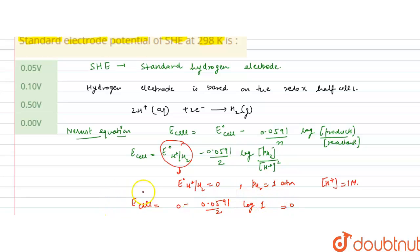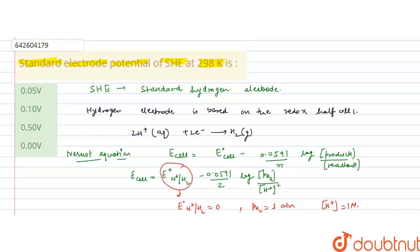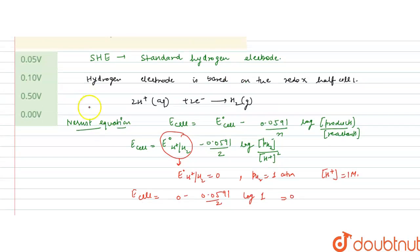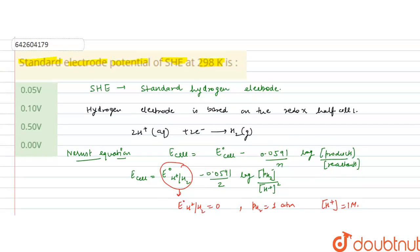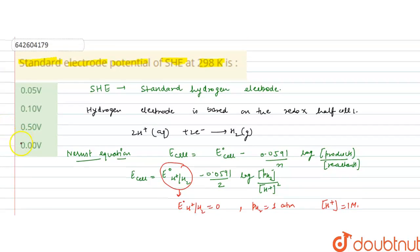This means E_cell = 0. Since the question asks for the standard electrode potential, and we're at standard conditions, E° for the hydrogen electrode is 0. The answer is option D: 0 V.